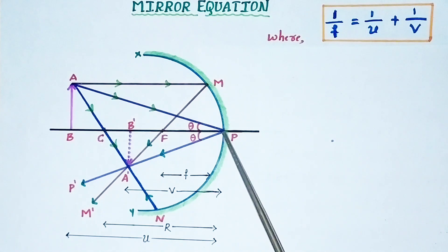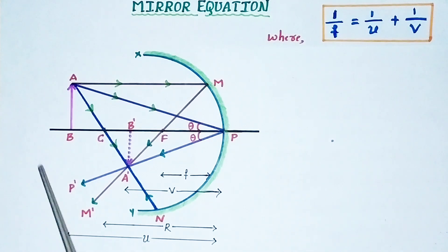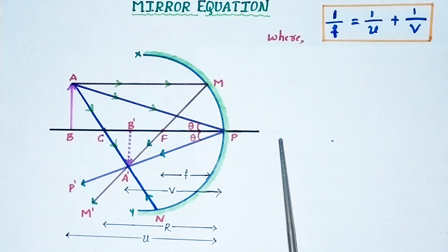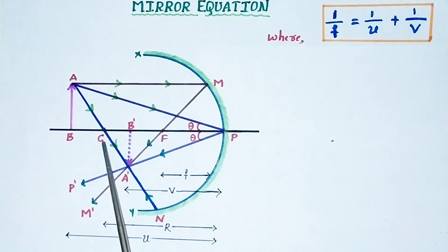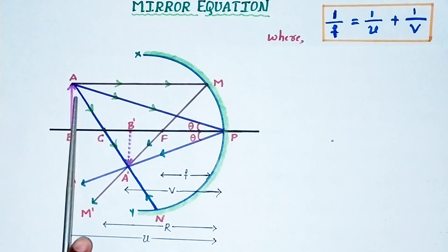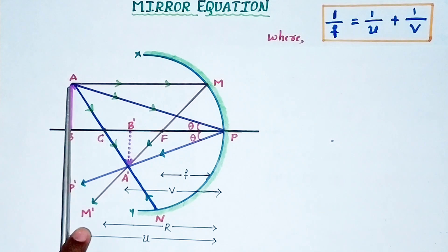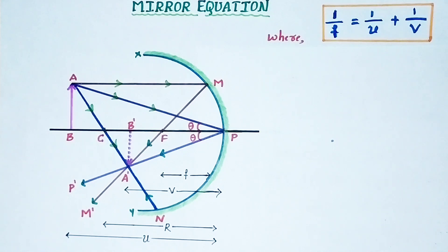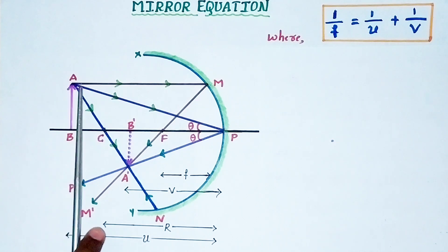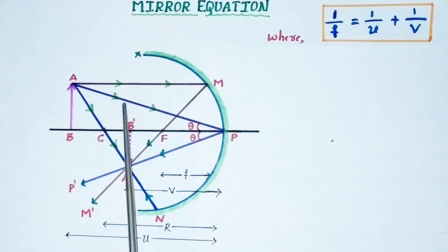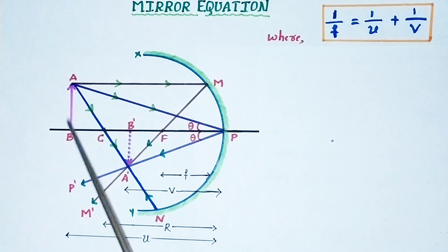The midpoint of the concave mirror is the pole, denoted by P. The principal axis joins the pole and the center of curvature. Now I am going to consider an object AB. This object is kept on the principal axis — you can take this as a candle. The candle is our object and I am going to keep it exactly on the principal axis.